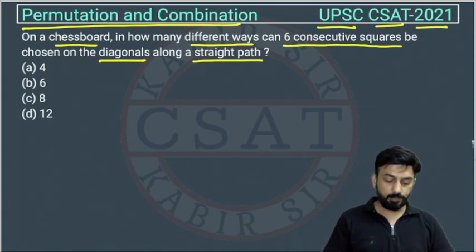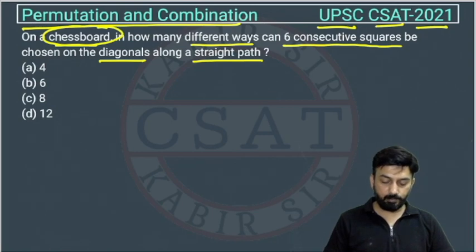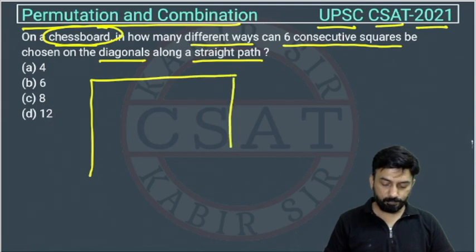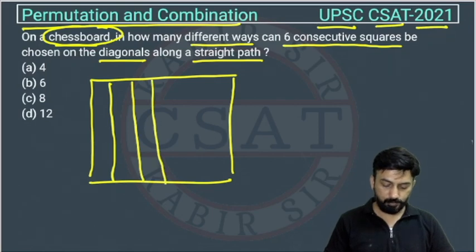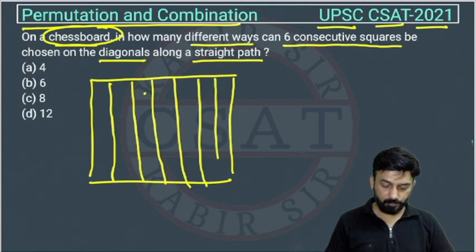So this is a problem of chessboard. In the chessboard we have 8 rows and 8 columns. Then this way, if you want, I am drawing it. So how many? 1, 2, 3, 4, 5, 6, 7, one more we need.